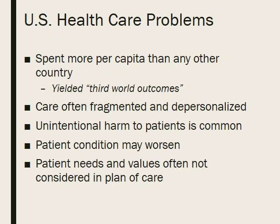In previous modules, you explored the performance of the U.S. health care system and some of its problems. We looked at the fact that the U.S. spends more per capita than any other country, yet yields third-world outcomes when you look at things like mortality and morbidity rates. Our care is often fragmented and depersonalized. Unintentional harm to patients is common with both medication errors and other types of illnesses and injuries that result from the patient being in our health care system. Patient needs and values are often not considered in plans of care.